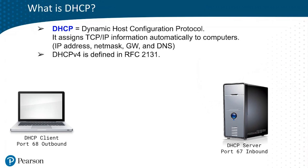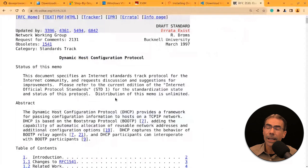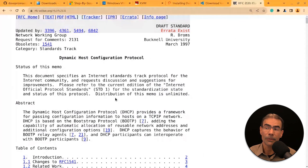We're going to be working mostly with IP version 4 in this course, so it stands to reason that we're going to work with DHCP version 4. That is defined in RFC 2131, and you'll find that at the rfc-editor.org website, slash RFC, and then the name of the RFC — in this case, RFC 2131.